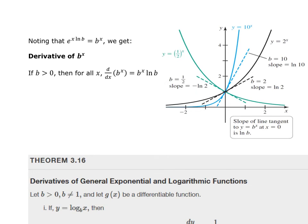So we have this rule that we learn in pre-calc and forget: any base B raised to the X can be rewritten with base E. We can write it as E raised to the natural log of B to the X. If I take B to the X, I can write this as E raised to the natural log of B to the X, because base B raised to the log base B of X equals X.